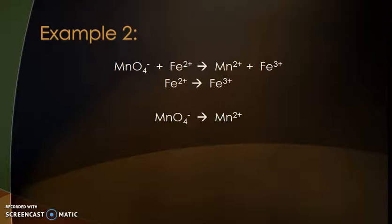Iron 2+ turning into iron 3+: we have equal numbers of ions on both sides, no oxygens, no hydrogens. The only thing we need to do is make the charges equal. With a 2+ charge on the left and a 3+ charge on the right, we add one electron, making it balanced.